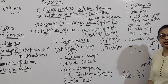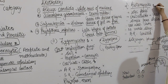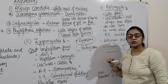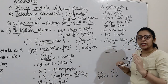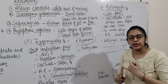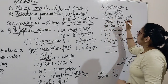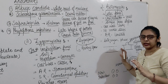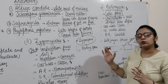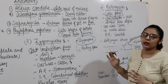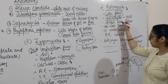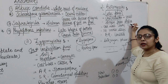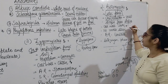The second class is Ascomycetes, also known as sac fungi. For a unicellular example, there is only yeast — Saccharomyces. So if asked which class yeast belongs to, the answer is Ascomycetes. Simple pore septa is present. The cell wall is made up of chitin.